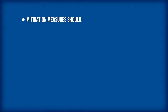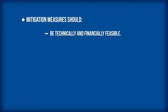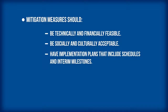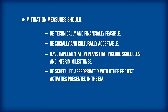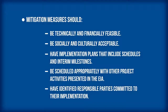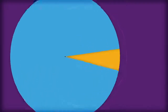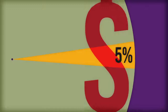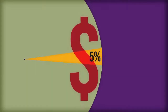Mitigation measures should be technically and financially feasible, with adequate financial and non-financial resources available for implementation. They should be socially and culturally acceptable, have implementation plans that include schedules and interim milestones, be scheduled appropriately with other project activities, and have identified responsible parties committed to their implementation. Remember, avoiding the last 5% of the impacts can be more costly than avoiding all of the other impacts combined — and this is where compensation comes into play.